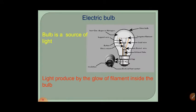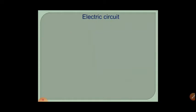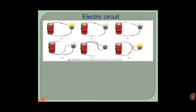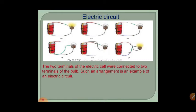Light is produced by the glow of the filament inside the bulb when it is connected to a power supply. Now, for electric circuits — there are six pictures showing different arrangements of one cell and one bulb. Only two of the pictures show a glowing bulb. In the first arrangement, the wire is connected to both the cell and the bulb.